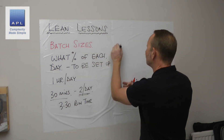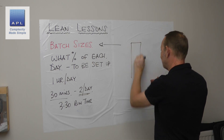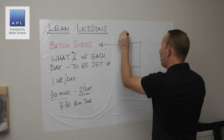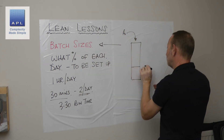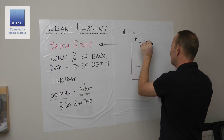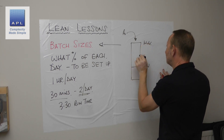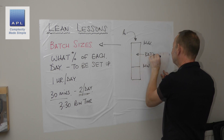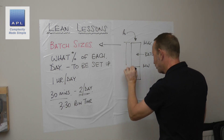Of course, if this is linked to a min/max pull system, which we've discussed, part A will have a batch size. When you get the difference between the min and the max, it's going to be the batch size — so you've always got the space for it.